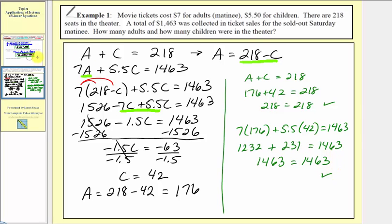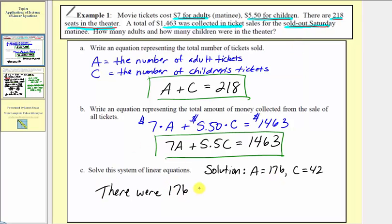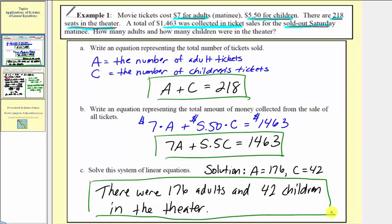Going back to the first slide, let's put our answer in a sentence. Our solution was A equals one hundred seventy six and C equals forty two. So the answer to the question 'how many adults and how many children were in the theater?' is: there were one hundred seventy six adults and forty two children in the theater. I hope you found this helpful.